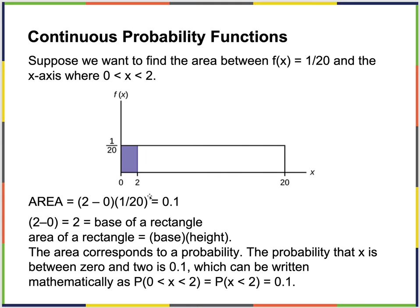Suppose we want to find the probability — the area of this function 1/20 — between the points 0 and 2. The length is 2, the height is 1/20, so area equals height times width: 2 times 1/20 equals 1/10, or 0.1.